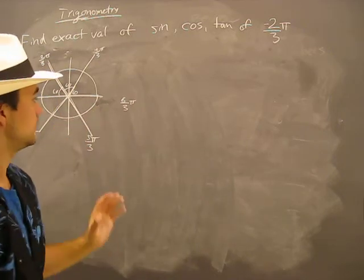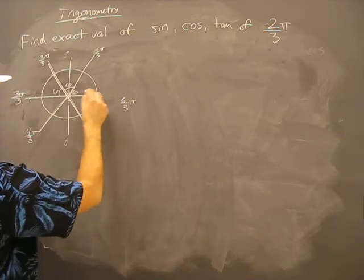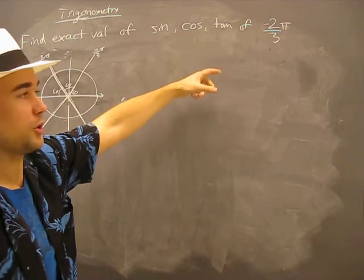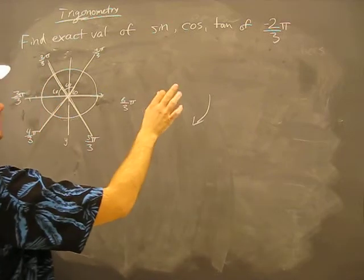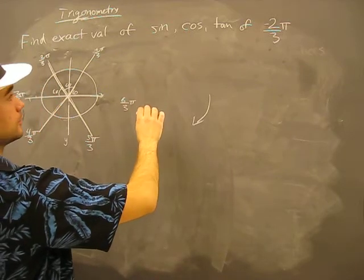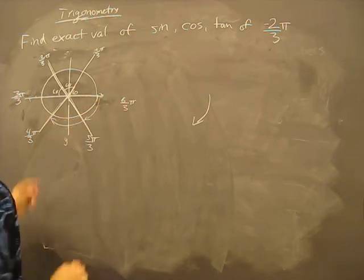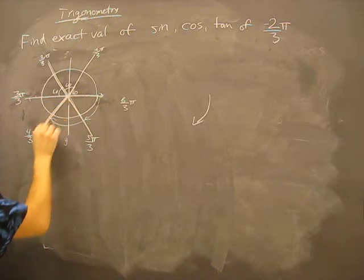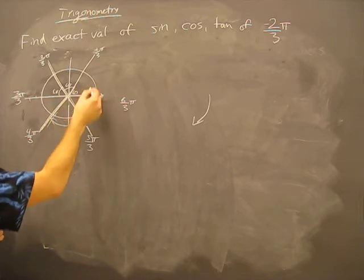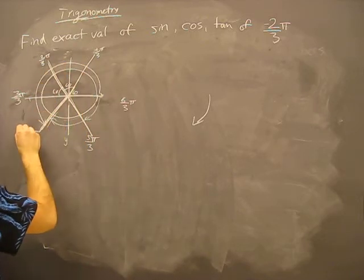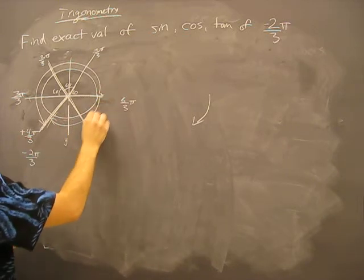Each section is sixty degrees here. This is just our x and y axis. Now, it says negative two-thirds pi. Negative means we're going clockwise. Going clockwise: negative one-third pi, then negative two-thirds pi — we're dealing with this angle right here. We can call this angle four-thirds pi if we measure it going counterclockwise, positive four-thirds pi. But it's also the same as negative two-thirds pi if we measure it from the other side.